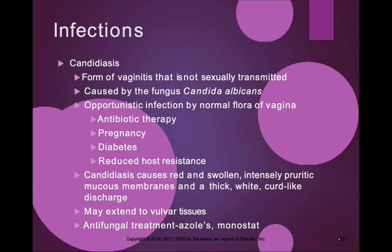We previously discussed Candida resulting in thrush of the tongue due to overuse of antibiotics and the oral contraceptive. Now we're seeing this fungal infection again. It is an opportunistic infection by the normal flora of the vaginal area, and it is caused by antibiotic therapy. We can also see it in pregnancy, in diabetes, and in individuals with a weakened immune system or reduced host resistance such as HIV.